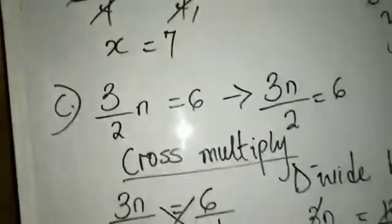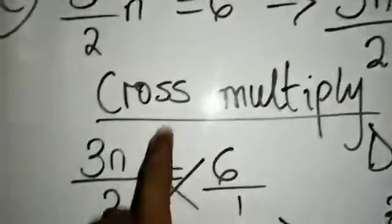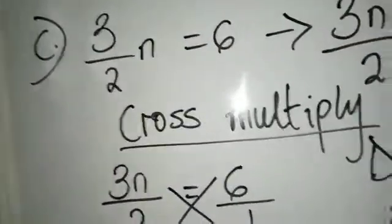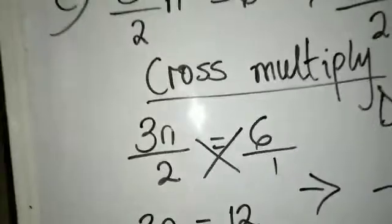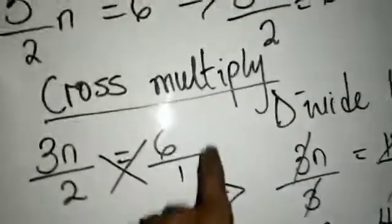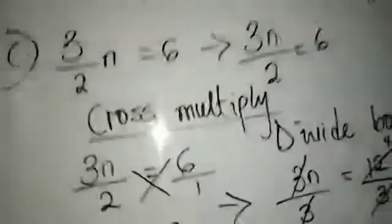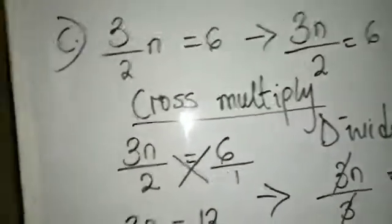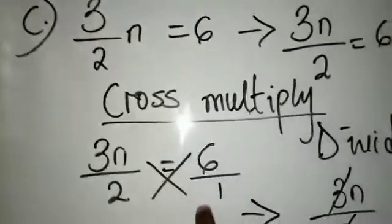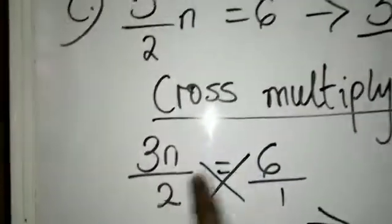Now, the first thing I'm going to do is cross multiply. I'm now going to have 3n divided by 2 is equal to 6 over 1. Why did I put that 1? Because there's nothing under that 6, and we know that 6 divided by 1 will give us 6. This is the sign of our cross multiply, multiplying everything here with what is here.